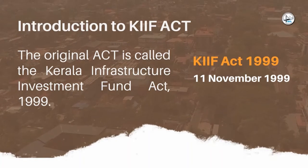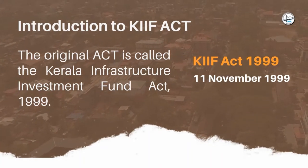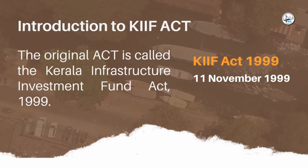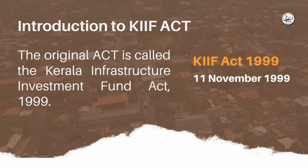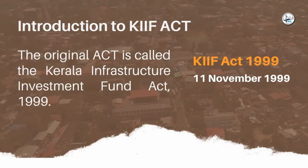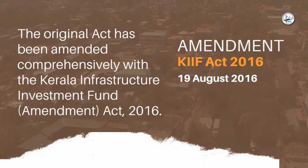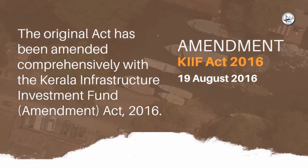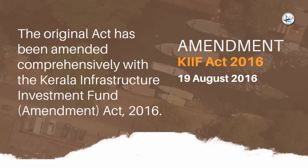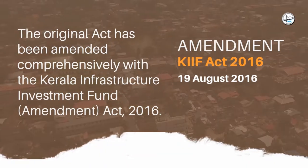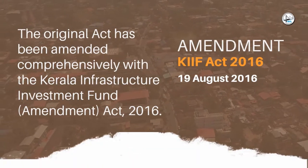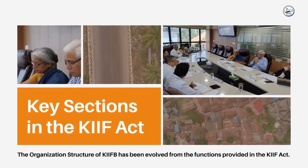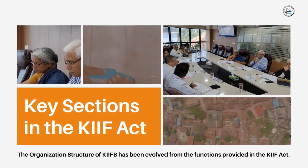The original act is called the Kerala Infrastructure Investment Fund Act, 1999, which came into force on 11th November 1999. This act was later amended as Kerala Infrastructure Investment Fund Amendment Act and it came into force on 19th August 2016. Let's now look into the key sections of KIF Act.